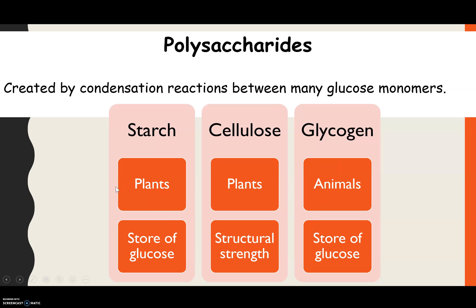Polysaccharides are created by condensation reactions, with multiple condensation reactions bonding together all of the glucose monomers. The three polysaccharides you need to know are all created from glucose monomers: starch, which is found in plants and is a store of glucose; cellulose, found in plants, with a function of structural strength; and glycogen, found in animals, which is a store of glucose.